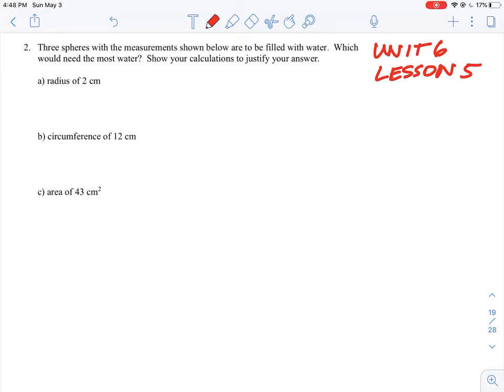Let's take a look at question number two here in unit six, lesson five. What we're being asked to do is figure out which sphere would contain the most amount of water. So what we're looking at here is calculating volume and comparing the volume of all three different objects. It says here, show calculations to justify your answer.